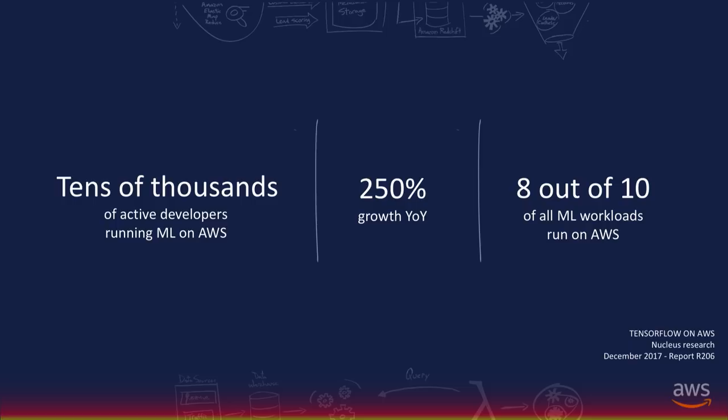Today we're seeing tens of thousands of developers actively developing machine learning products for tests and production on top of AWS. Regarding the machine learning platforms at AWS, we're observing 250% year-over-year growth — a humongous amount of people coming to develop and deploy applications. According to Nucleus Research in December 2017, eight out of ten machine learning workloads run in AWS today.